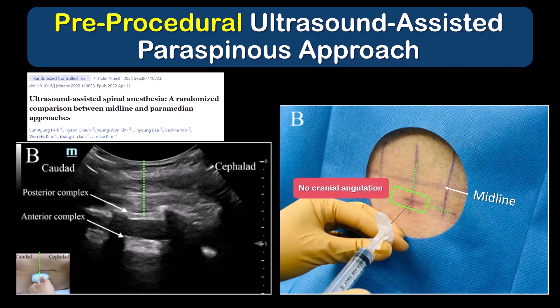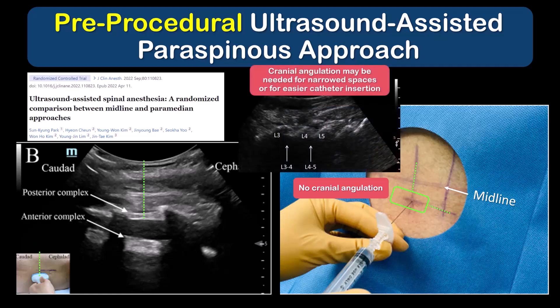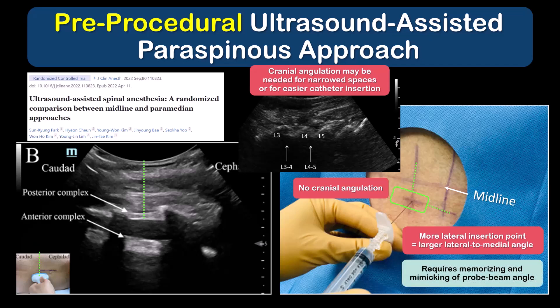There are two things to realize about this technique. First, it means they are often attempting to access the interlaminar space without any cranial angulation of the needle. This is fine when the space is large, but when the space is narrowed, the needle tip may get caught up on the lip of the lamina. Remember too that epidural catheters feed more easily if the needle is angled cranially, so this may not be ideal for lumbar epidurals. Second, the insertion point is more lateral with a larger lateral to medial angle, and most investigators admit it requires memorizing the angle of probe direction and mimicking that with the needle — which requires more guesswork, is more prone to error, and less experienced practitioners may find it difficult. For these reasons, I don't do it this way.